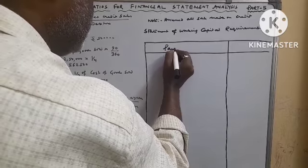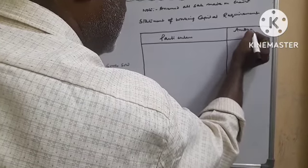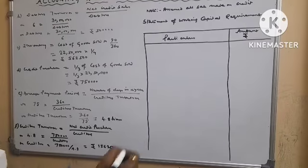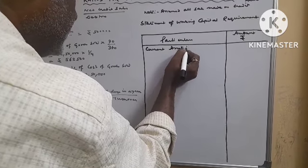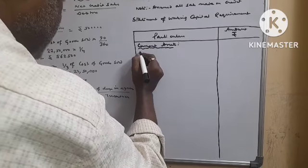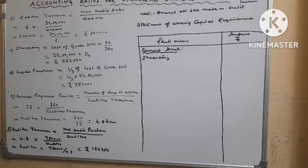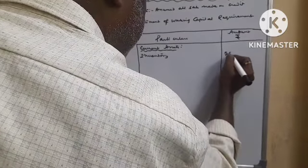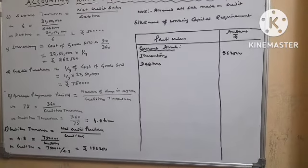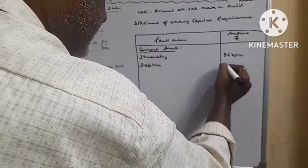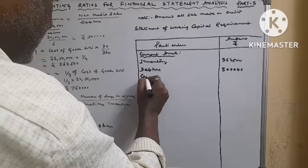Particulars, amount. Current assets: Inventory 5,62,500, Debtors equals to 5 lakhs, Cash and bank balance.